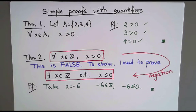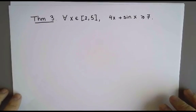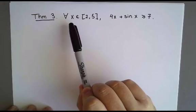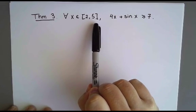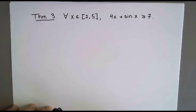Let's try to do something less straightforward, something that requires a little bit more care. Here is another theorem with quantifiers that won't be a single line. I want to prove that for every real number in this interval between 2 and 5, this expression is greater or equal than 7.